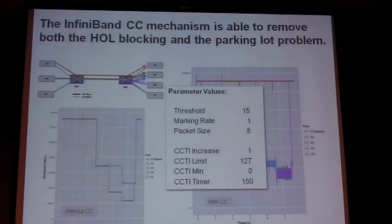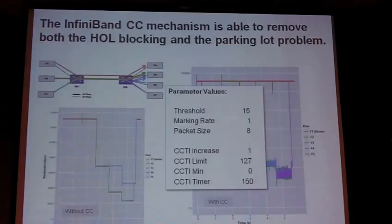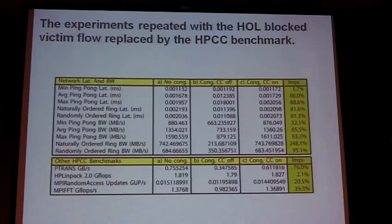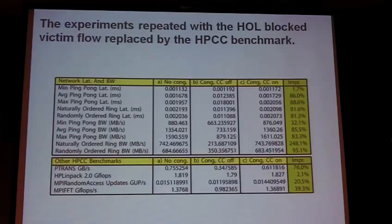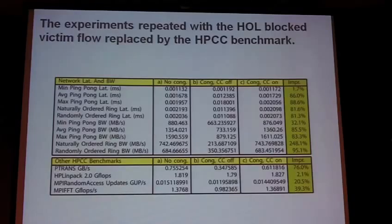In order to make congestion control work, we need proper configuration, and it took quite a bit of trial and error to reach a working set of parameters. To visualize results differently, we replaced the victim flow perf-test with the HPCC benchmark on host 1 and host 4. All benchmarks gain significantly when congestion control is activated, as shown in the rightmost column with percentage gains. The amount of gain is related to the level of communication for each benchmark type. It's a simple test and a very small scenario, but it shows there are real improvements to be gained.